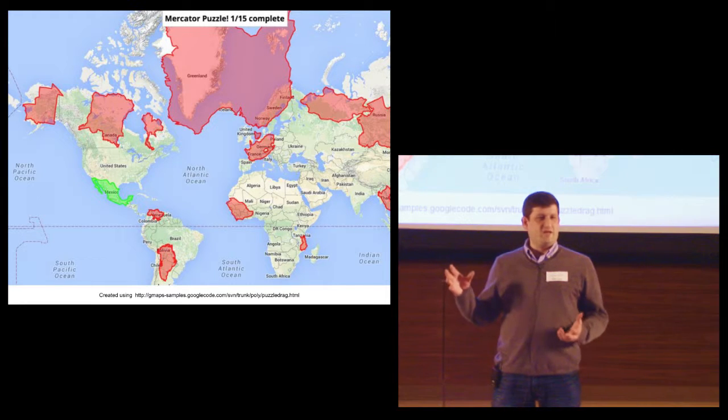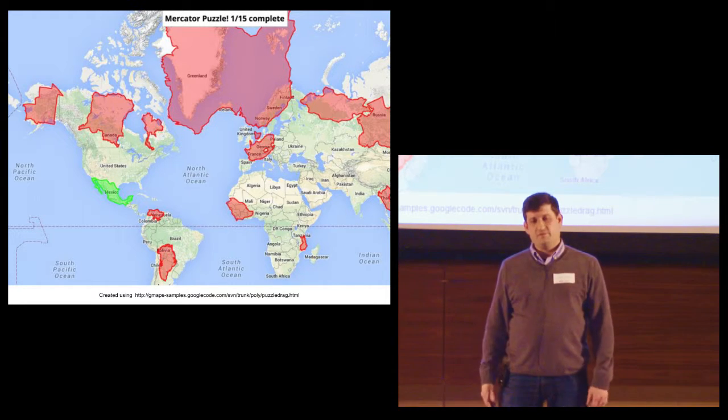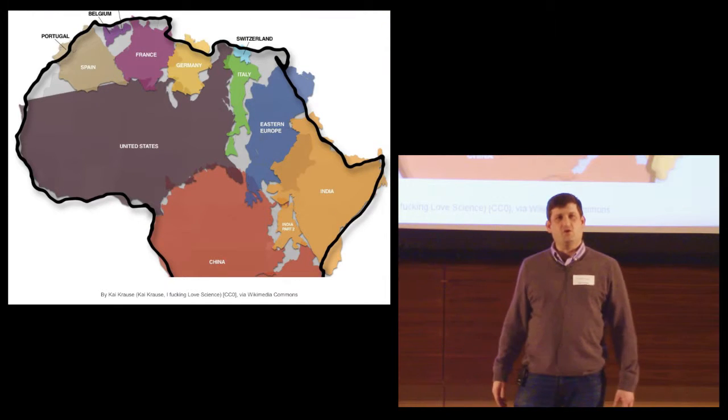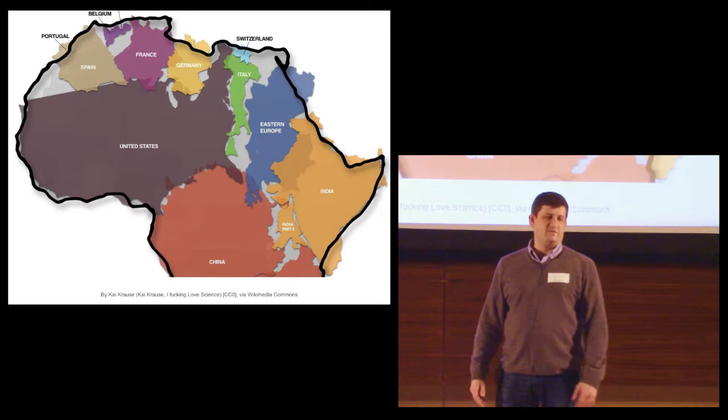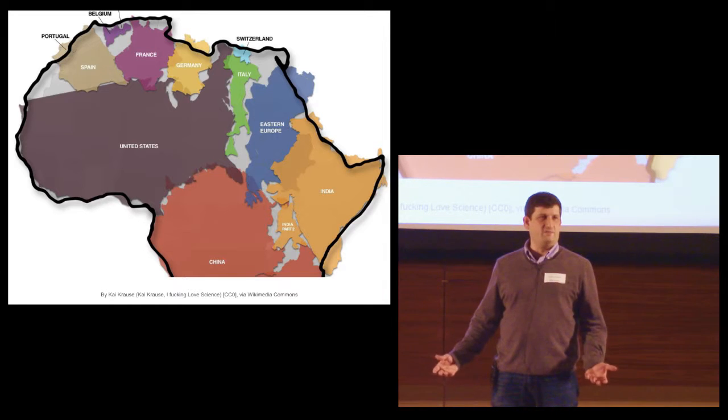But misunderstanding the shape of countries affects us. It's why the true size of Africa goes viral on Facebook. On a Mercator map, Africa and Greenland are the same size, but Africa is 14 times larger.